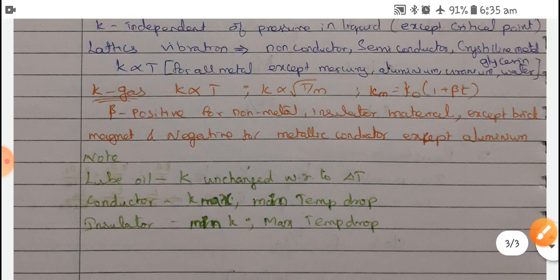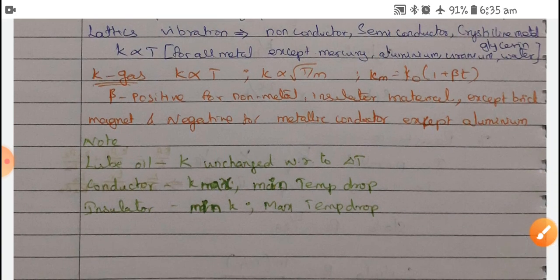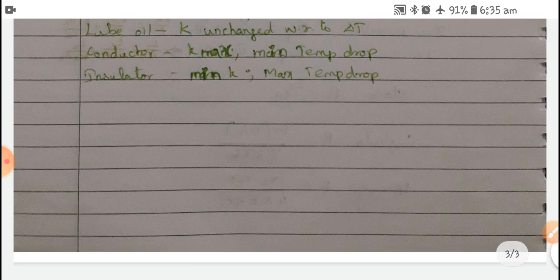For lubricating oil, thermal conductivity is unchanged with respect to temperature. For a conductor, maximum thermal conductivity occurs at minimum temperature drop. For an insulator, minimum thermal conductivity occurs at maximum temperature drop. With this, I am going to close today's session about thermal conductivity. I hope you have enjoyed the video. If you have any doubts, please let me know in the comment section, and I will put another video for clarifying your doubts. Bye-bye from Santos. Thank you for patient listening.